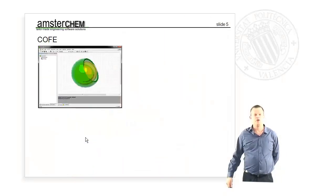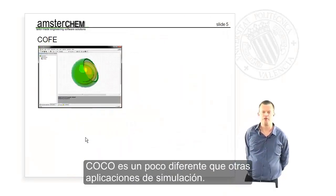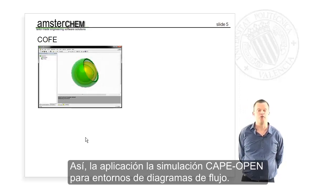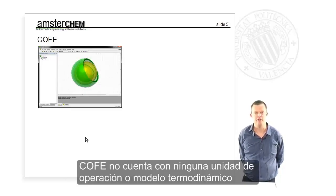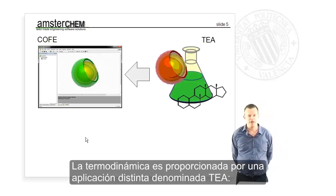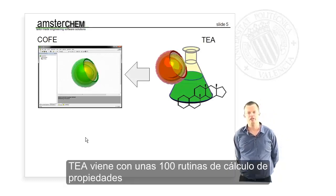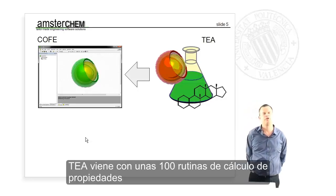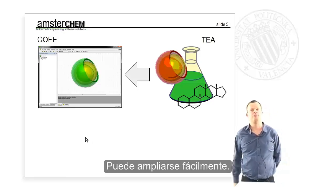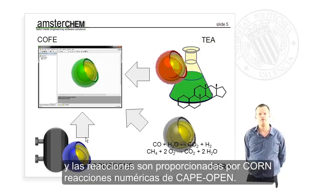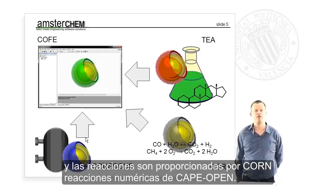COCO is a little bit different from other simulation applications because COCO assumes from the start that you want to mix and match. The simulation application — the CAPE-OPEN flow sheeting environment COFFEE — does not come with any built-in unit operations or thermodynamic models. The thermodynamics are served by a separate application called TEA — Thermodynamics for Engineering Applications — which comes with over 100 property calculation routines and a standard component library of more than 400 components that can easily be extended. The unit operations are provided by COUSCOUS, and the reactions are served by CORN, which stands for CAPE-OPEN Reaction Numerics.